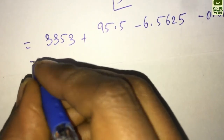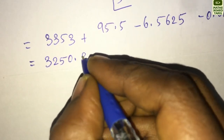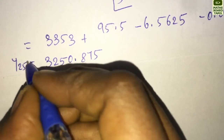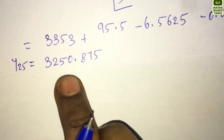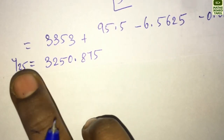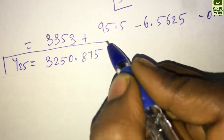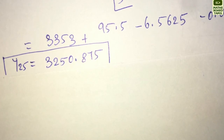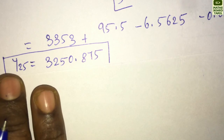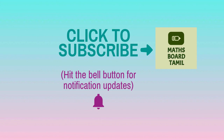Adding all terms, we get the final answer: Y(25) = 3250.875. So the value of Y(25) is 3250.875.